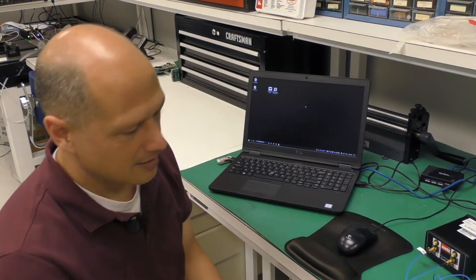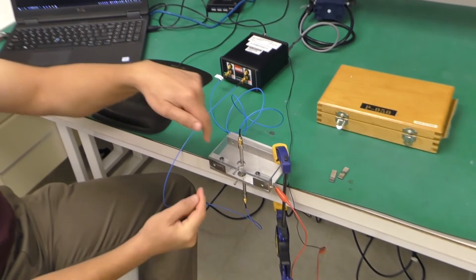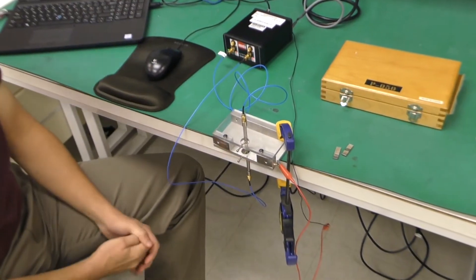Another application for the digital acu-measure is thickness measurement. In this case, we're using this fixture to hold the two probes up against each other.